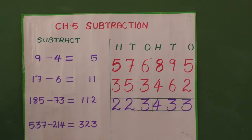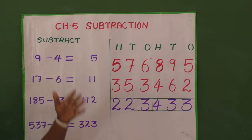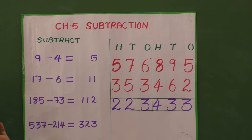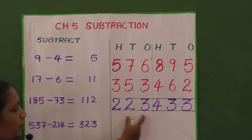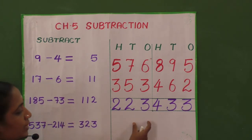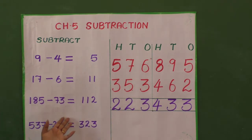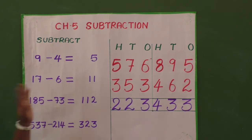If you are confused about how to do these sums, no problem. You can write the subtraction using your own method — both answers will come out the same. For example, if you don't know 185 minus 73, write the three-digit number on top and the two-digit number below, then do subtraction as usual and write the answer.